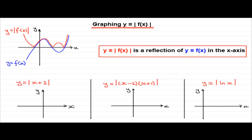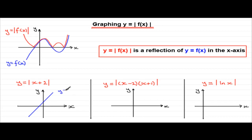Welcome back. For y equals the mod of (x+2), first consider the graph without the mod — y equals x+2. This is a straight line in the form y equals mx+c. The gradient is 1, and it intersects the y-axis at 2. So we have a line looking something like this — this is the line y equals x+2.